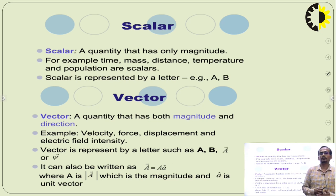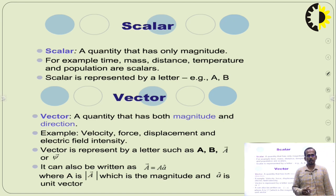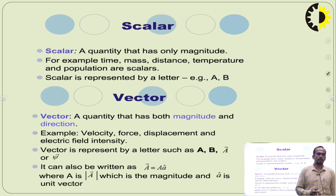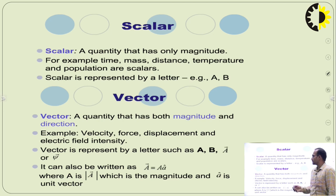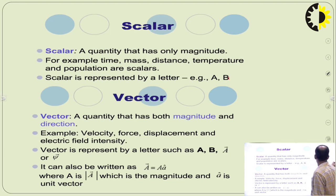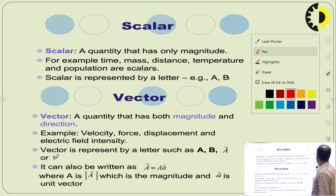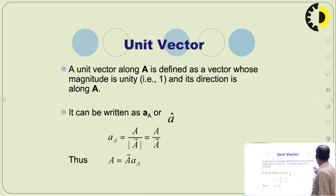What is a scalar? A scalar is a quantity that has only magnitude. Examples of scalars are time, mass, distance, temperature, and population. A scalar quantity can be represented simply as a or b.